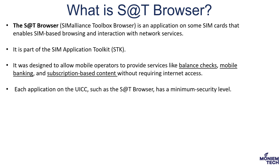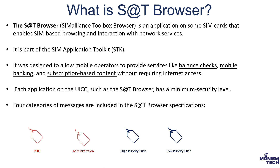There are four categories of messages included in the S&T browser specification: pull, administration, high priority push, and low priority push. The zero trust level is widely used for high priority push and low priority push. A number of operator implementations of S&T browser use non-security parameter settings for these messages. This means any attacker can send a push message to the target device without needing to apply any authentication, and the S&T browser will accept this message. So high priority push and low priority push are the types of messages used in the Simjacker attack.